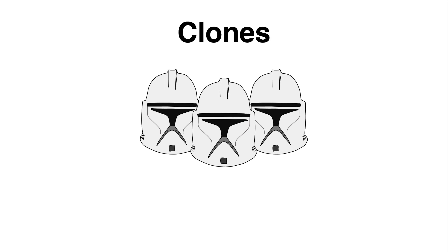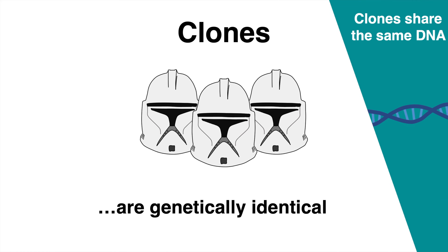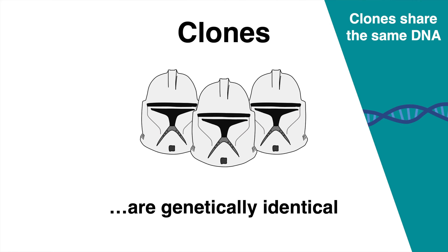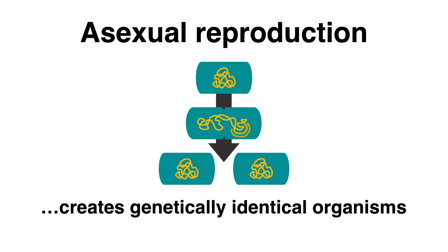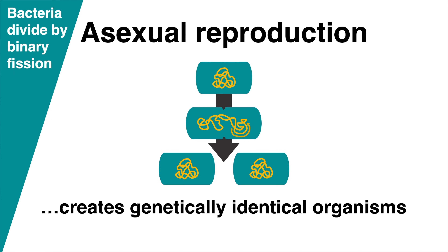Clones share the same genetic information. Two organisms are considered clones when they are genetically identical. Asexual reproduction is one way in nature to create genetically identical organisms.